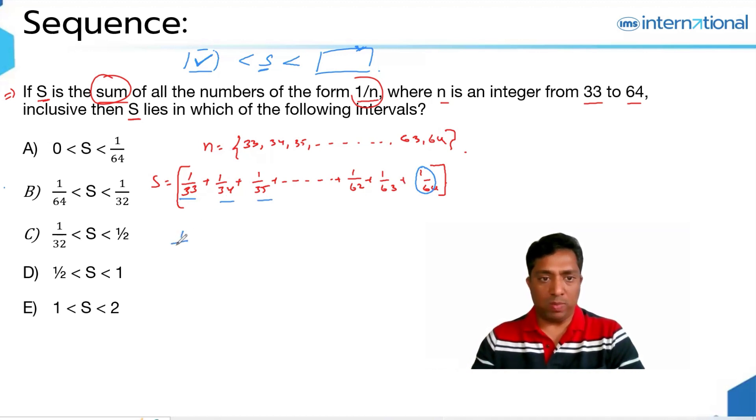I can say that 1/64 is less than each of these 32 elements in the summation. So, 32 times 1/64 must be less than S. Likewise, if you look at it, among these numbers...